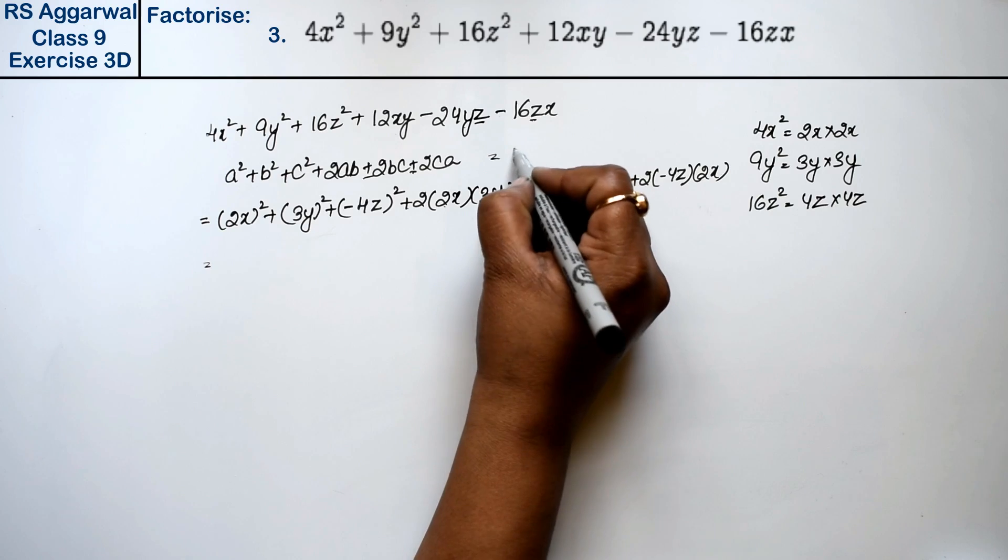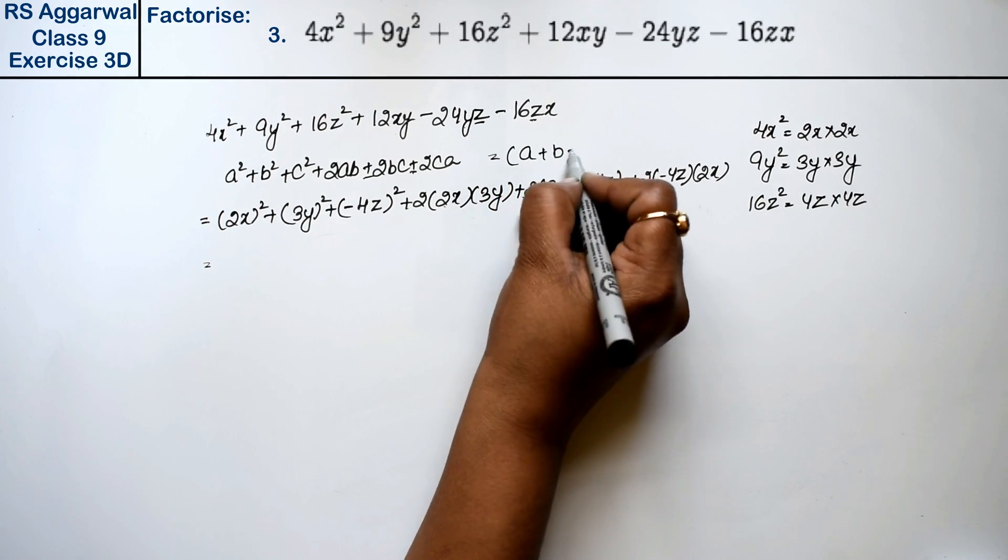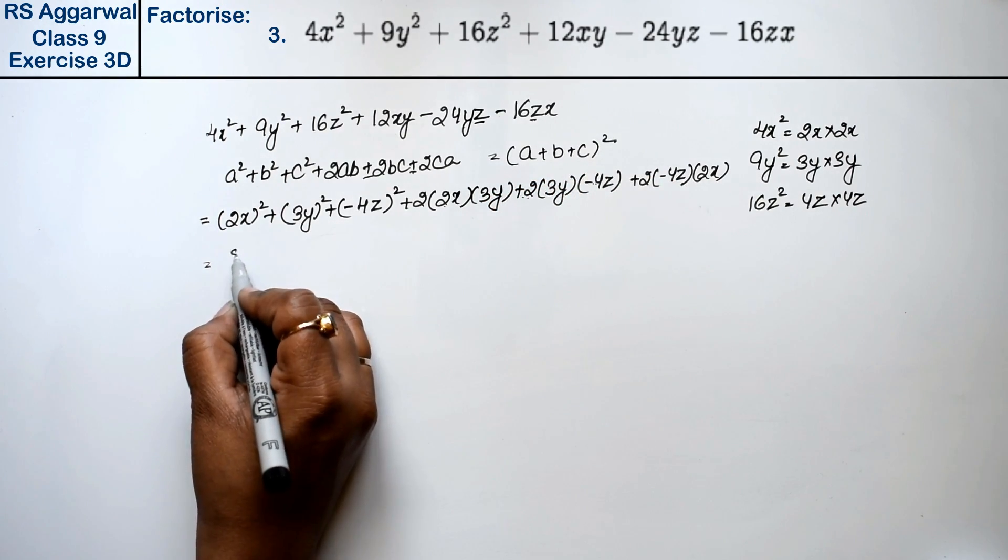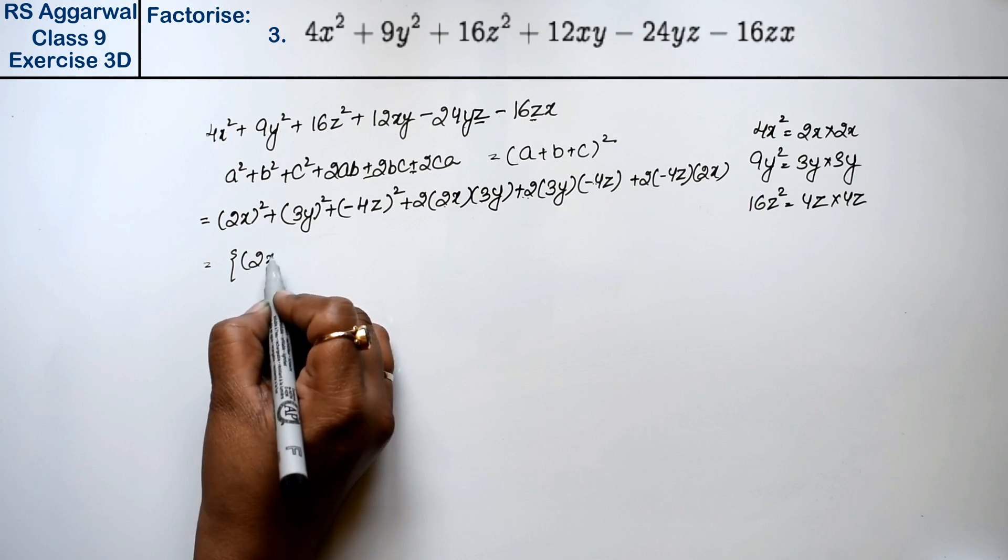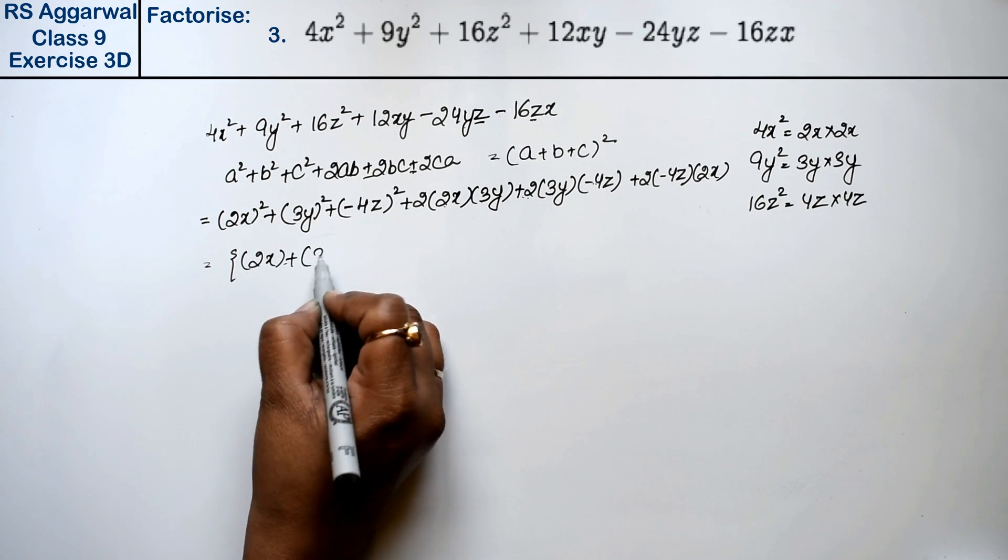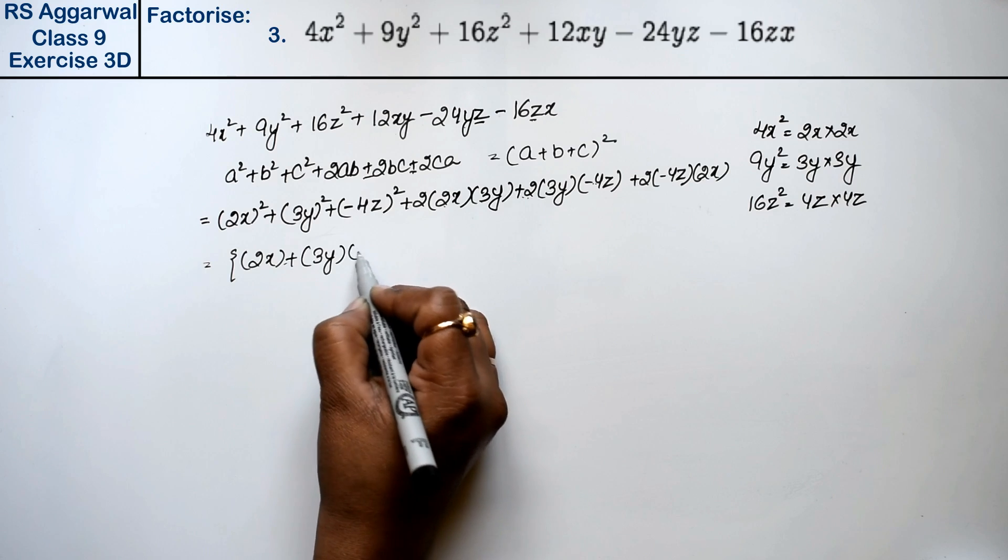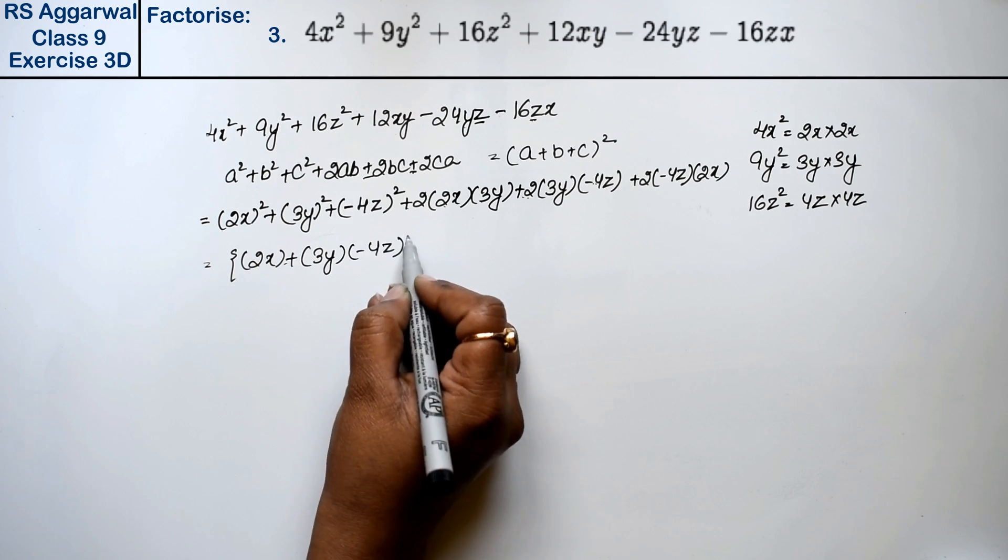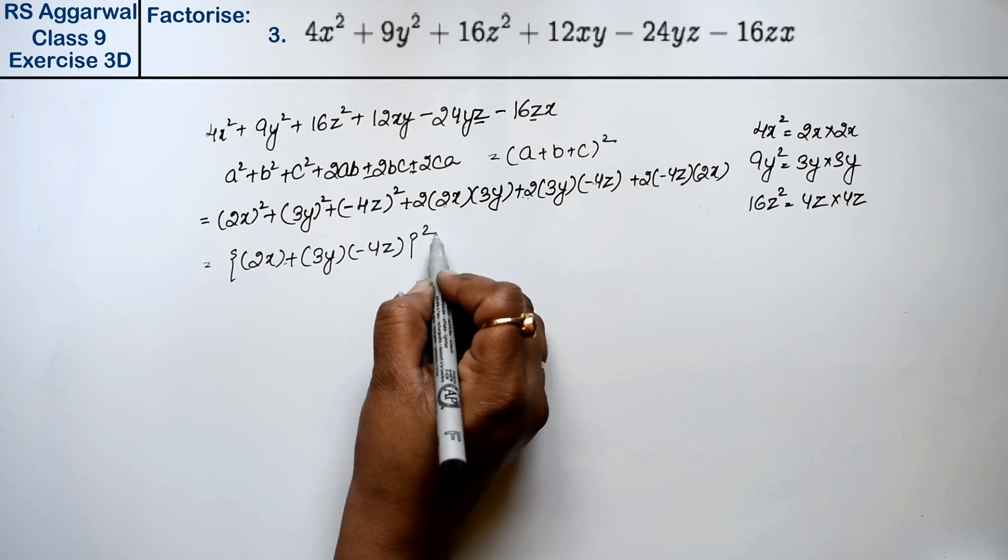So which formula is this? This formula was a + b + c whole square. So what we have to do: a is 2x, plus b was 3y, and c was minus 4z, sorry 4z whole square.